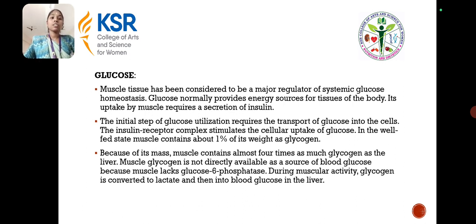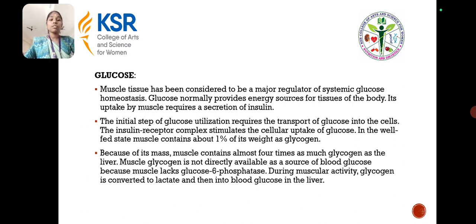Muscle tissue is considered to be the major regulator of systematic glucose homeostasis. Glucose normally provides an energy source for the tissues of the body, and its uptake by the muscle requires secretion of insulin. The initial step of glucose utilization requires the transport of glucose into the cells. The insulin-receptor complex stimulates the cellular uptake of glucose, and a well-fed muscle contains about 1% of it as glycogen. Muscle glycogen is not directly available as a source of blood glucose because muscles lack glucose-6-phosphatase.